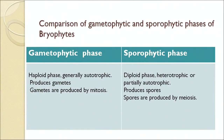Bryophytes are the pioneers of vegetation — the first to grow on various habitats like rock, lava, sand and water — and they act as soil binders. Comparing the two phases: the gametophyte phase is haploid, generally autotrophic, and produces gametes by mitosis. The sporophyte phase is diploid, heterotrophic or partially autotrophic, and always produces spores by meiosis. The main difference between the two phases is the process of division — mitosis versus meiosis.